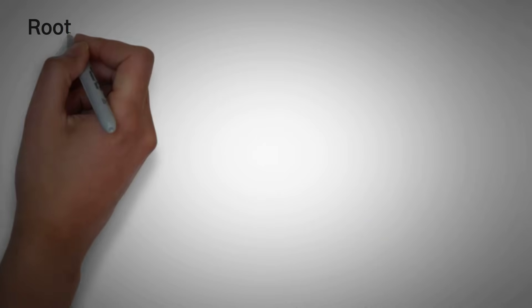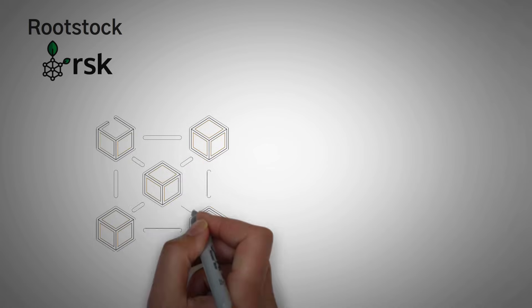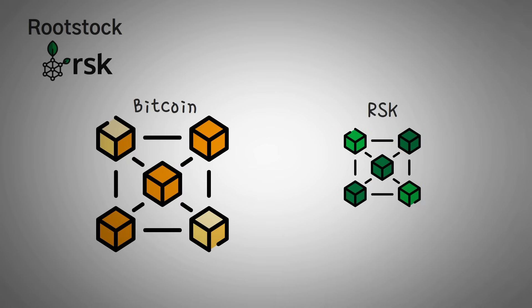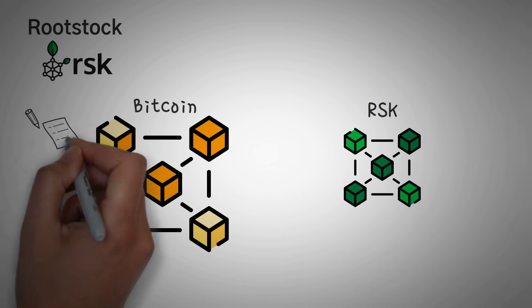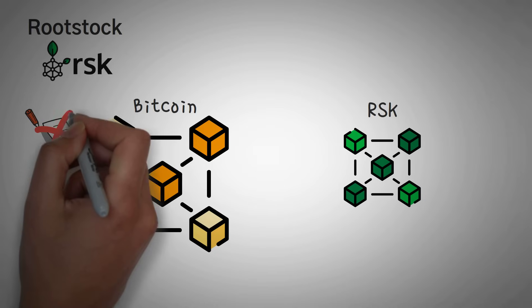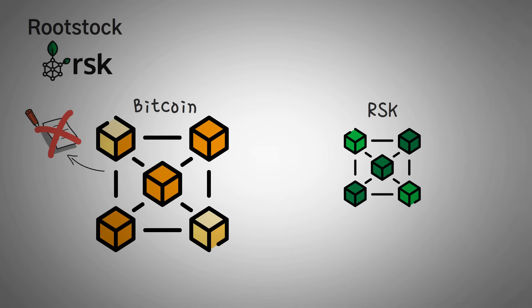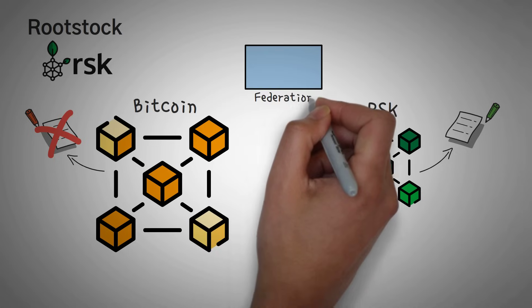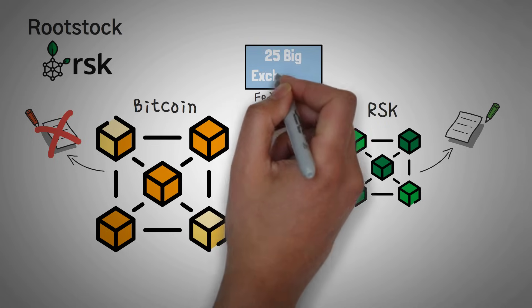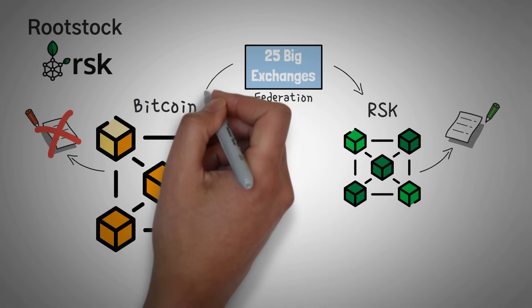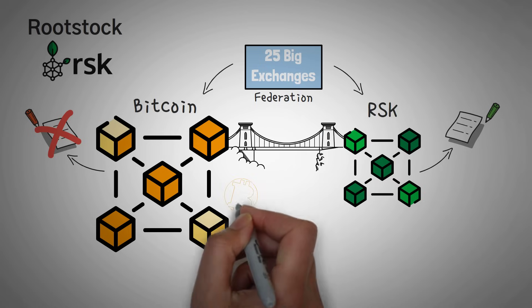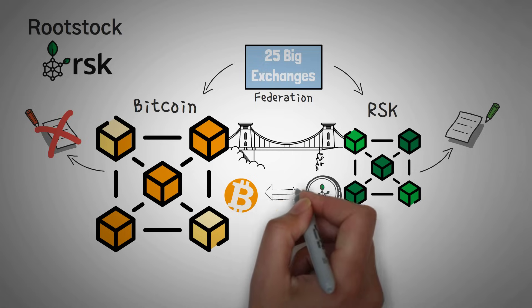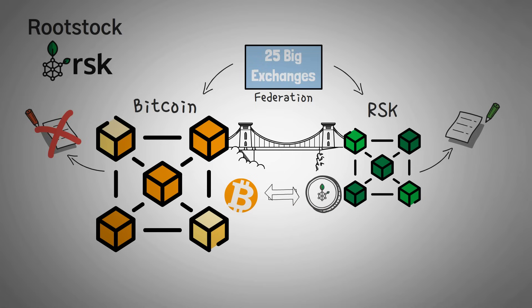One example of a sidechain we want to talk about is Rootstock. Rootstock, or RSK as it is commonly called, is simply a sidechain to Bitcoin. Bitcoin doesn't really have the ability to do smart contracts. Mostly, Bitcoin just processes transactions. However, Rootstock is a sidechain that allows the usage of smart contracts. Rootstock's federation is actually made up of 25 of the biggest blockchain exchanges out there, and they have created this Bitcoin bridge where you can transfer your real Bitcoin for Rootstock versions of Bitcoin so that you can do smart contract stuff with it.